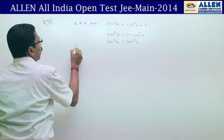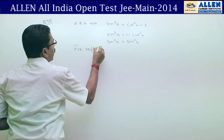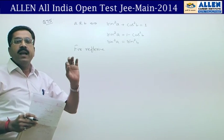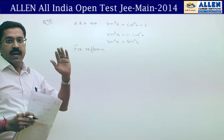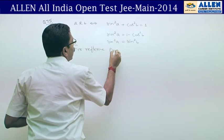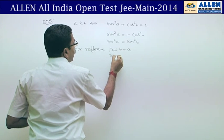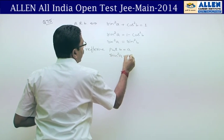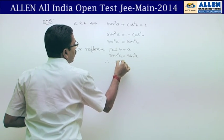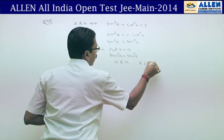Now we check for reflexive. For reflexive, every element must be related to itself. To check a's relation with a, we put b = a. sin²a = sin²a, which is true. Therefore, a is related to a, therefore R is reflexive.